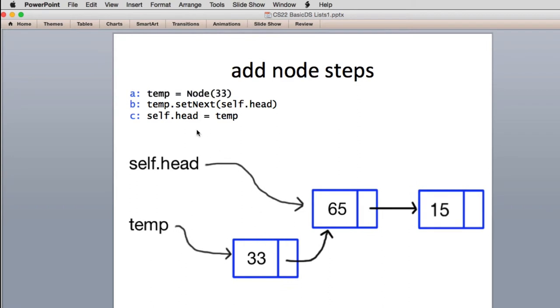The second step, it sets temp.setNext to point to head. So head's pointing to 65. So now we're saying, let's have temp's next value also point to 65. So you can see that they're both pointing to 65. And you can see here's the list, the new list.